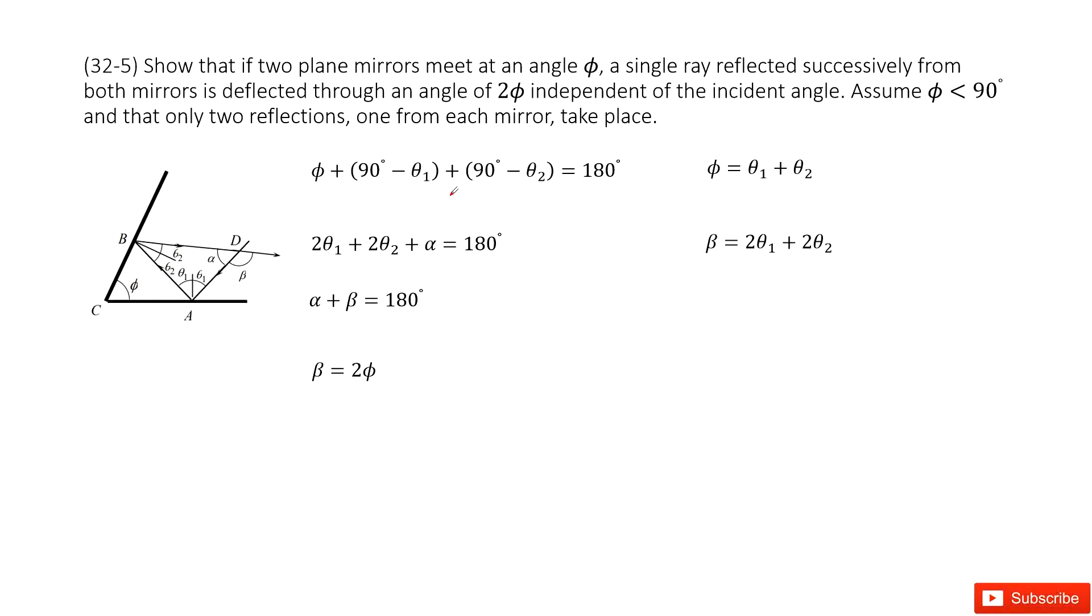Chapter 32 is about light, reflection, and refraction. Show that if two plane mirrors meet at an angle phi, a single ray reflected successively from both mirrors is deflected through an angle of 2 phi, independent of the incident angle.